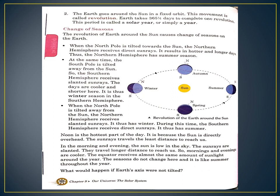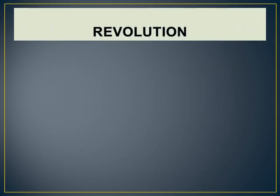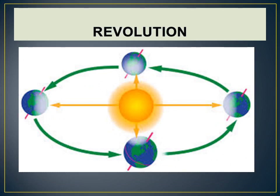Now we are going to discuss revolution in detail — the change of seasons. The revolution of earth around the sun causes the change of seasons on the earth. The seasons that happen on the earth are: summer, monsoon, autumn, late autumn, winter, and spring.